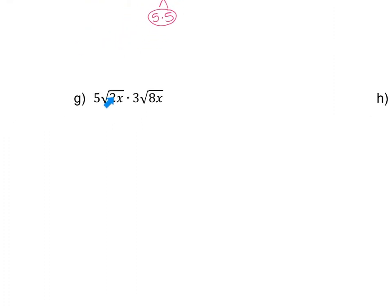Next: 5√(2x) times 3√(8x). Both are square roots, so multiply outsides: 5 times 3 is 15. Multiply insides: 2 times 8 is 16, and x times x (both x to the first) adds to x². The square root of 16 is simply 4, so 4 comes out and multiplies with 15 to give 60. For x²: 2 divides into 2 once, so x comes out. Final answer: 60x.